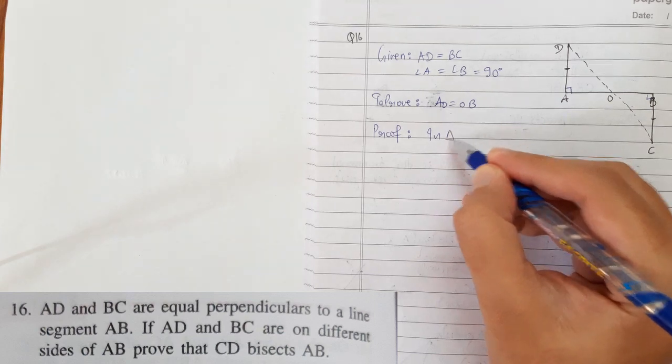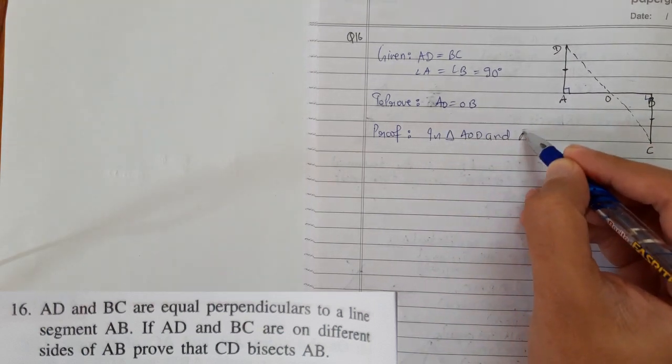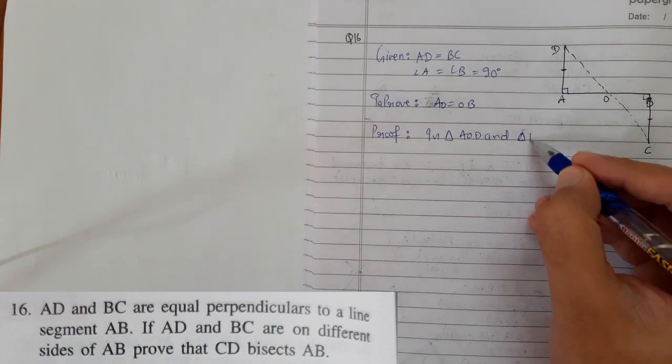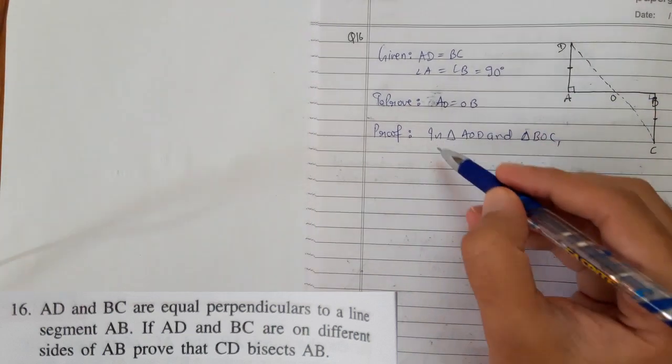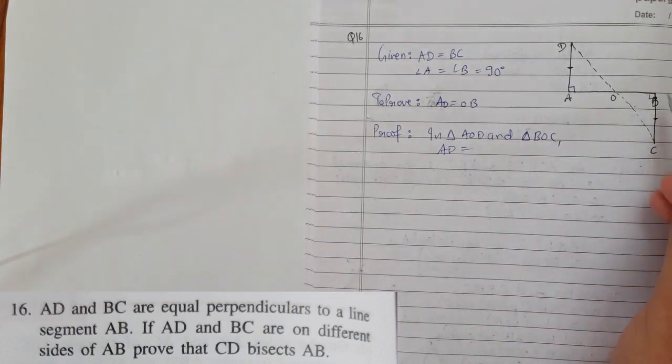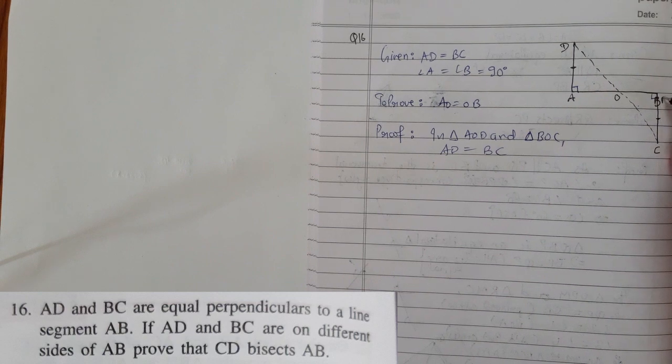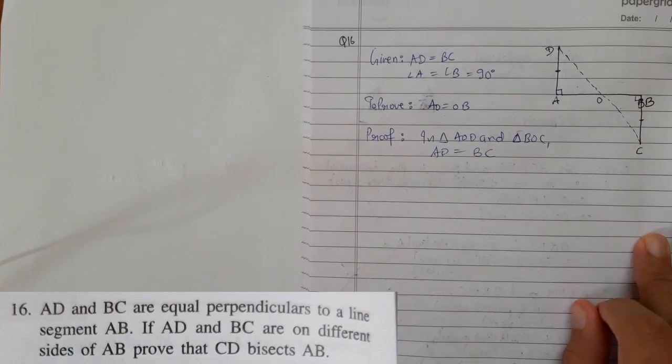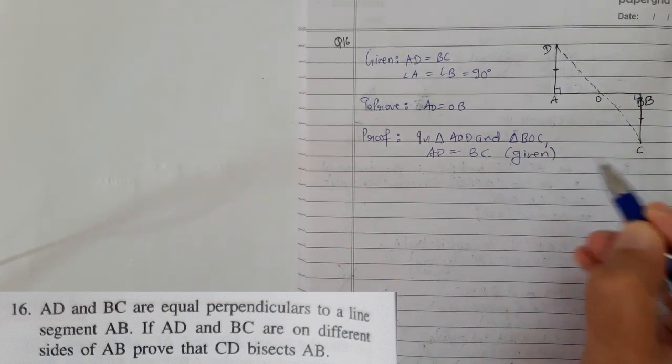Let's congruent them in triangle AOD and triangle BOC. First thing is very easy: AD equals to BC. This was very easily given.